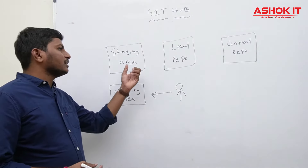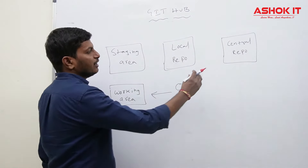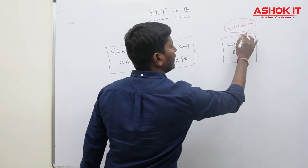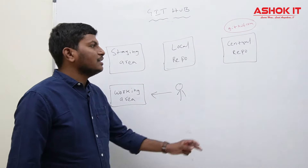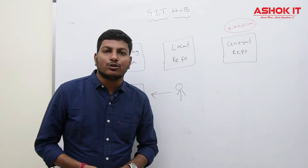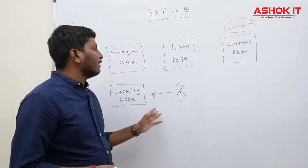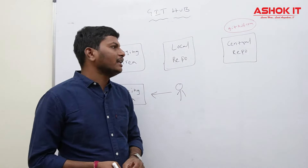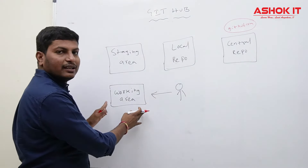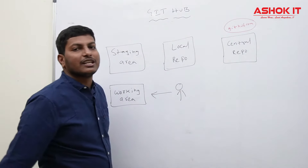To work with GitHub, first we need to understand the architecture. We create a repository in github.com — this is called the central repository, also known as the remote repository. All project source code will be available in this remote repository. All developers connect to this central repository to store their source code. But a developer cannot directly send files to the central repository — Git will not allow that.